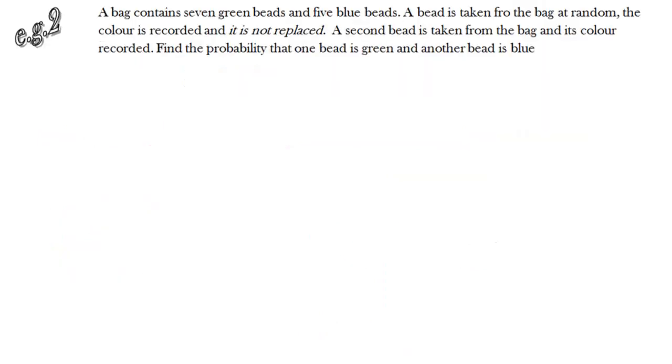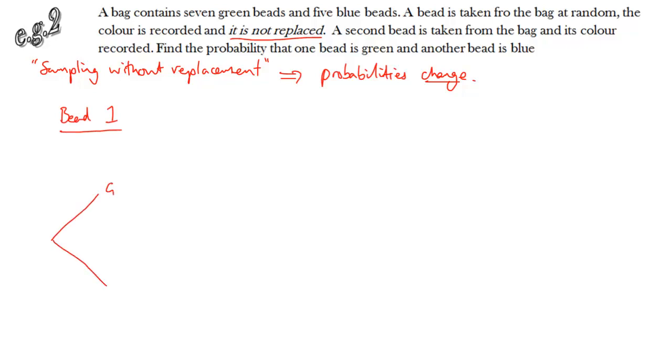Next example. This is a type that should be quite familiar to you from GCSE. It is known as sampling without replacement. We've got a bunch of beads in a bag. We take one out, record it, and then without putting that one back, we take another one. Because we haven't replaced it, the probabilities that apply to the second bead are different from those that apply to the first. So we look at each split of the tree diagram being the choice of a bead. The first one can be green, a probability of 7 twelfths, or blue, 5 twelfths. And that should be fairly straightforward.